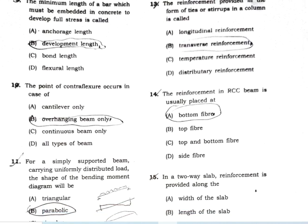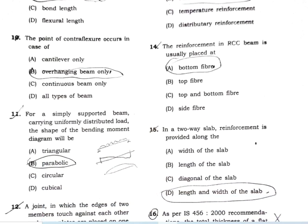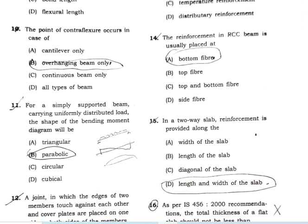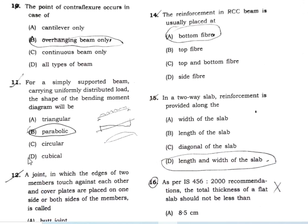The point of contra-flexure occurs in an overhanging beam. For a simply supported beam carrying a uniformly distributed load, the shape of the bending moment diagram will be parabolic.